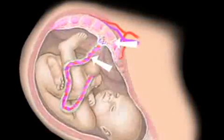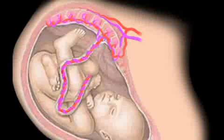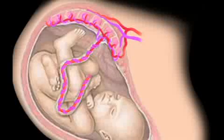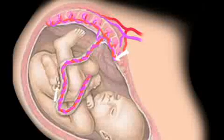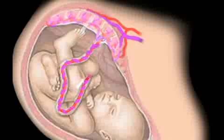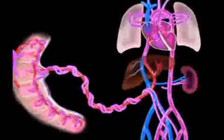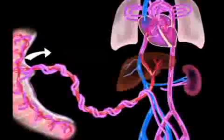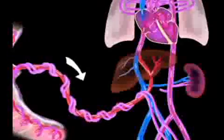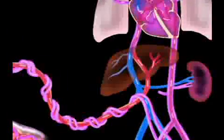The placenta and umbilical cord are part of a complex system that allows the maternal circulation to both oxygenate and eliminate waste from the fetus without mixing maternal and fetal blood. Transport of substances to and from the fetus occurs via a permeable membrane on the maternal surface of the placenta. Once cleansed and oxygenated, the blood travels from the placenta via the umbilical vein into the fetus, flowing toward the liver.